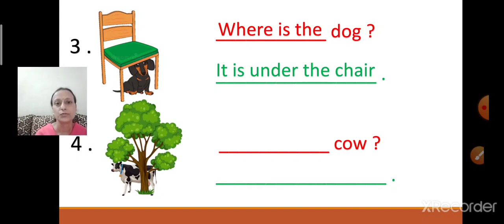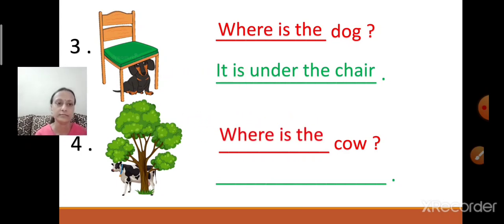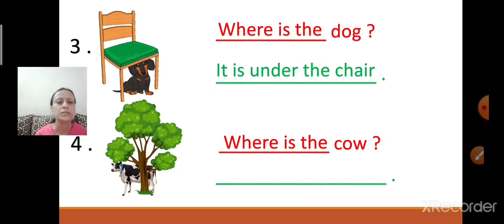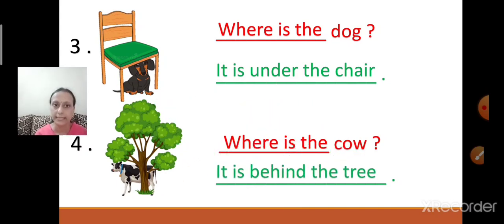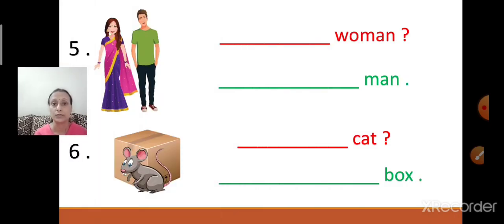Now let us move to the next question. I can see a tree and which animal? A cow. First frame the question: Where is the cow? Where is the cow, children? The cow is behind the tree — it has gone behind. So write: It is behind the tree. Spelling of behind is B-E-H-I-N-D. It is behind the tree. Neat work I want.